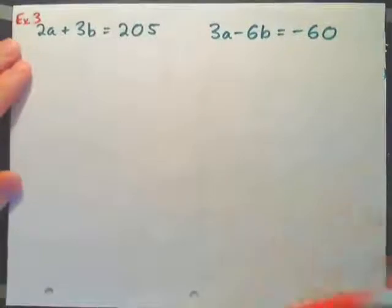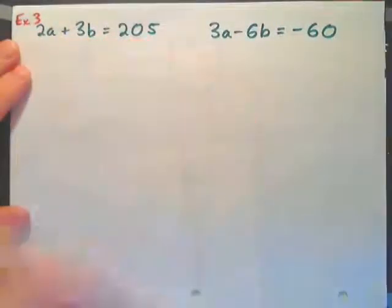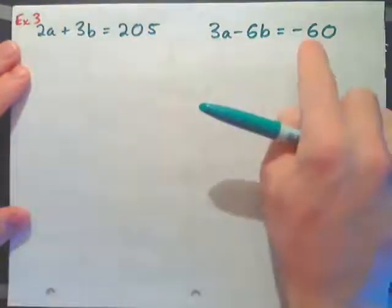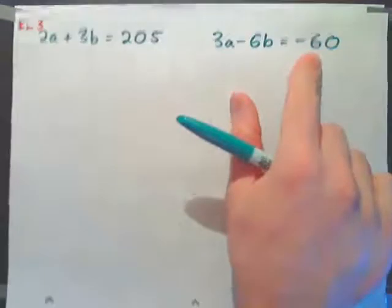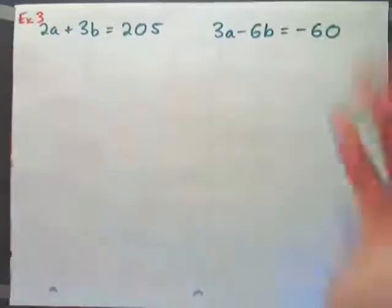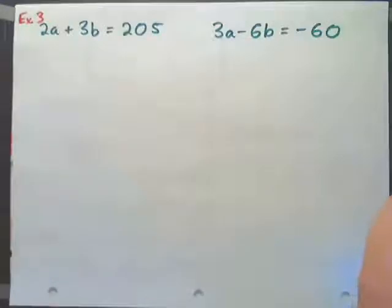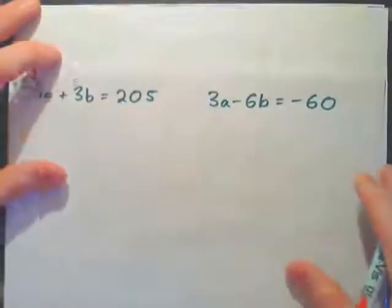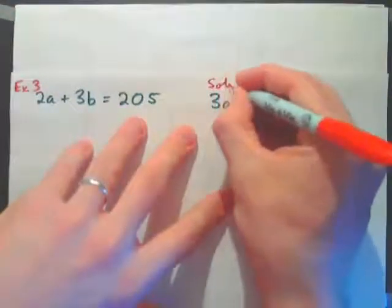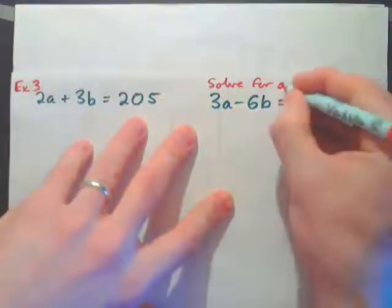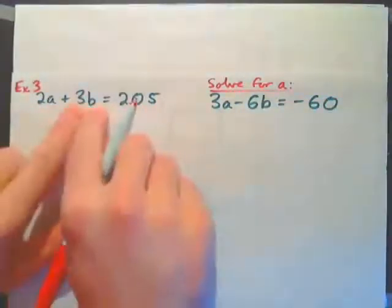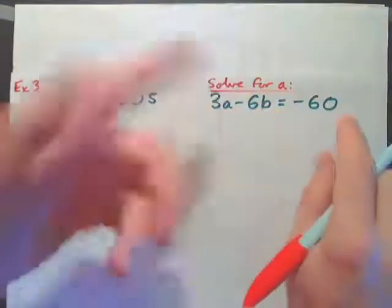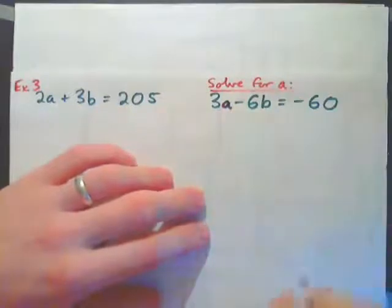Now let's look at example 3. In this case, 2 apples plus 3 bananas cost 205 cents, and 3 apples minus 6 bananas cost negative 60 cents — meaning that transaction leaves you in debt by 60 cents. What we've got to do is get one of the variables alone, so we might take this second equation and solve for a.